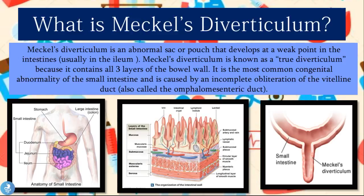Meckel's Diverticulum is an abnormal sac or pouch that develops at a weak point in the small intestines, usually in the ileum. It is also known as a true diverticulum because it contains all three layers of the bowel wall. It is the most common congenital abnormality of the small intestine and is caused by an incomplete obliteration of the vitelline duct, also known as the omphalomesenteric duct.